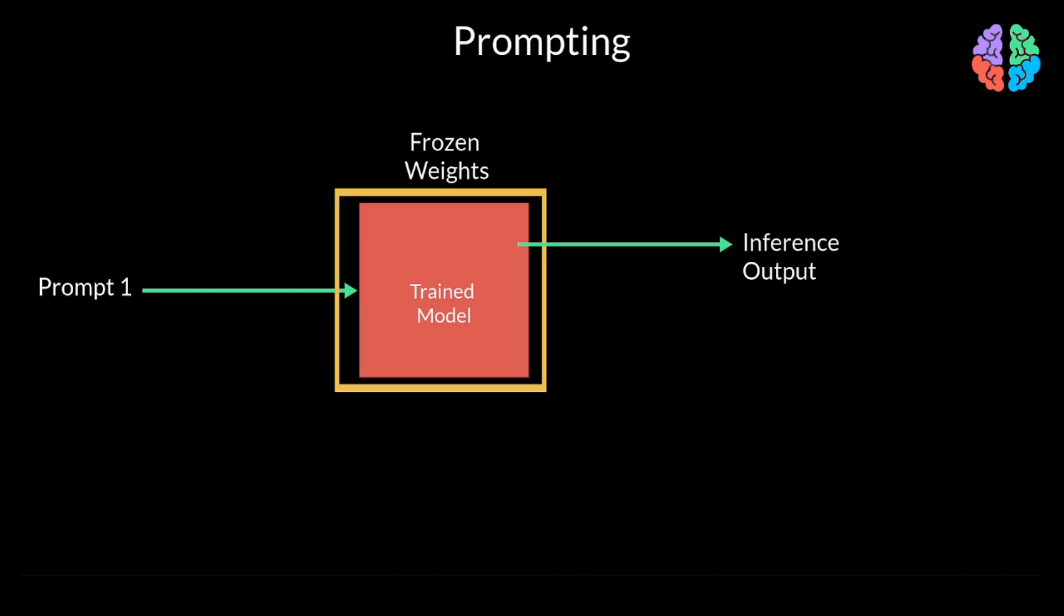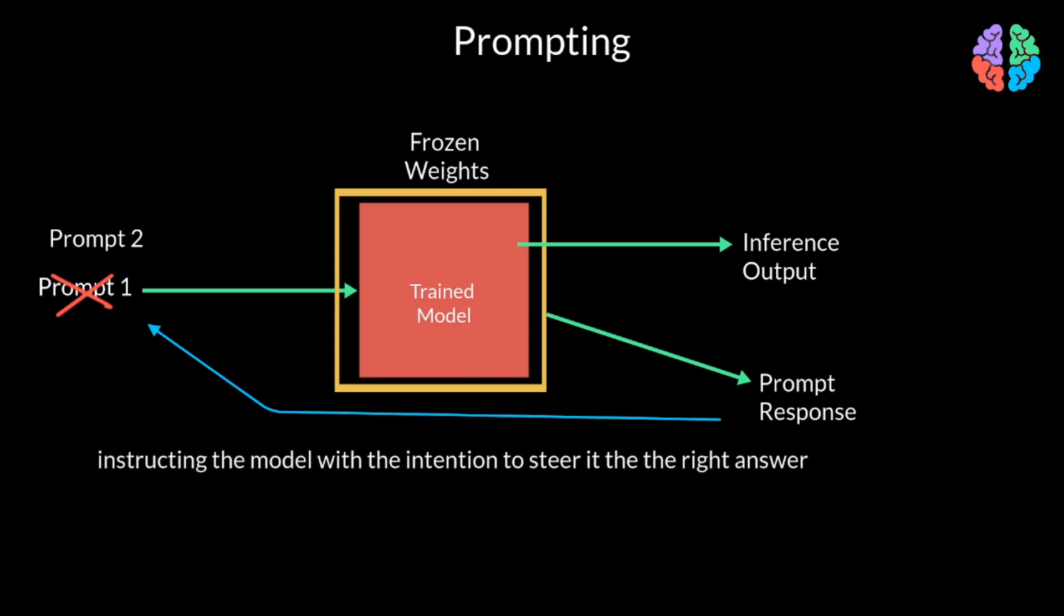Think of image classification as an example task. However, with prompting, you are not restricted to a single input. You can tweak the input to your needs to improve the model's behavior. You are more of instructing the model with the intention to steer it to the right answer. When you accept the model for given when it comes to inference, with prompting, you are studying the capabilities and limitations of the model.